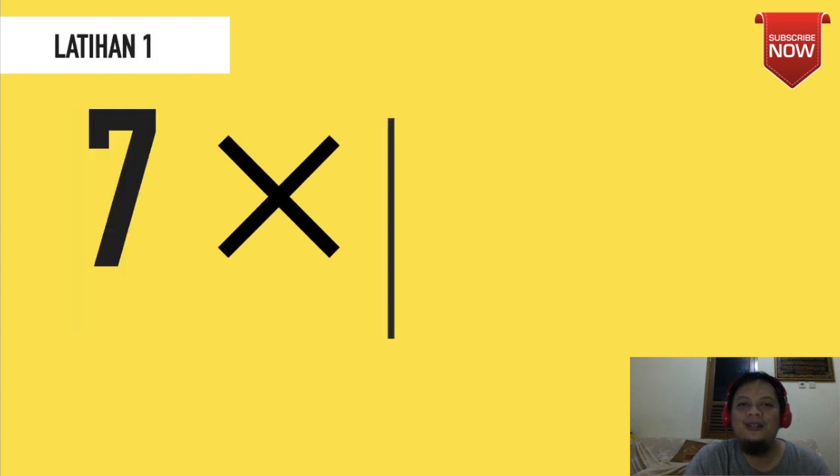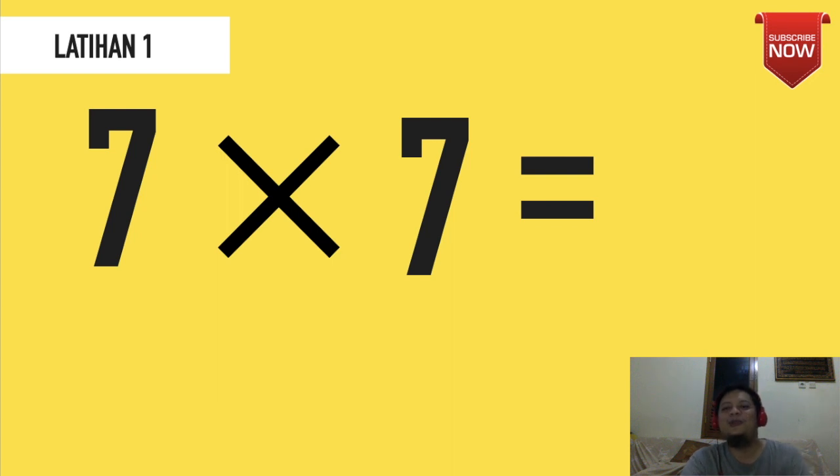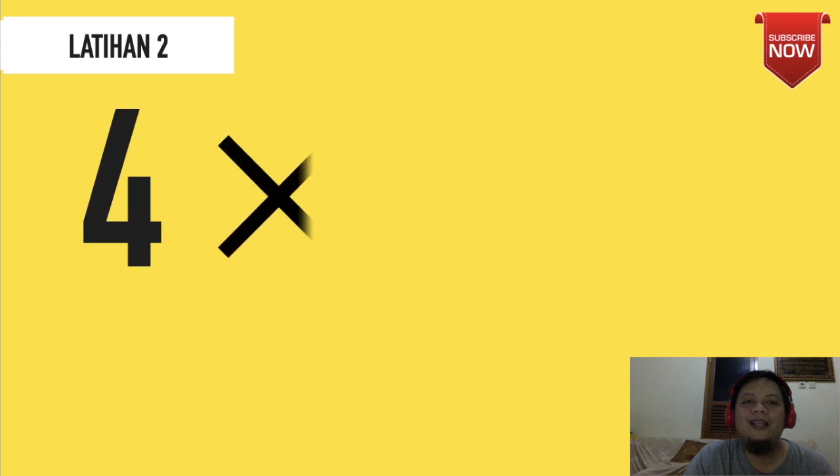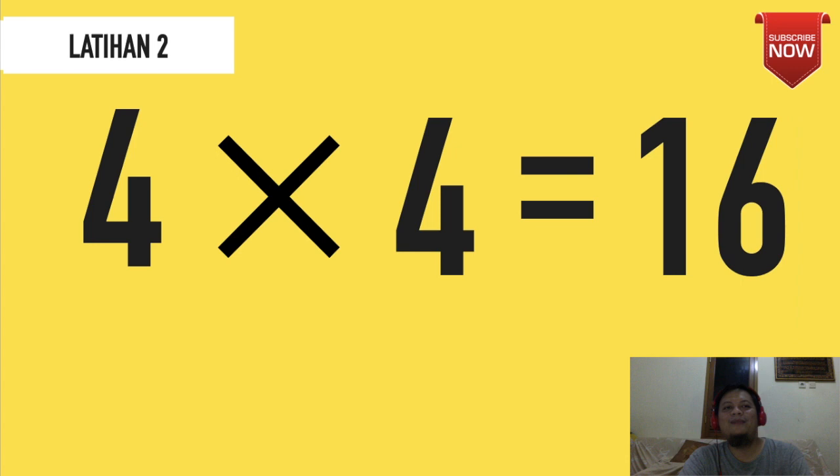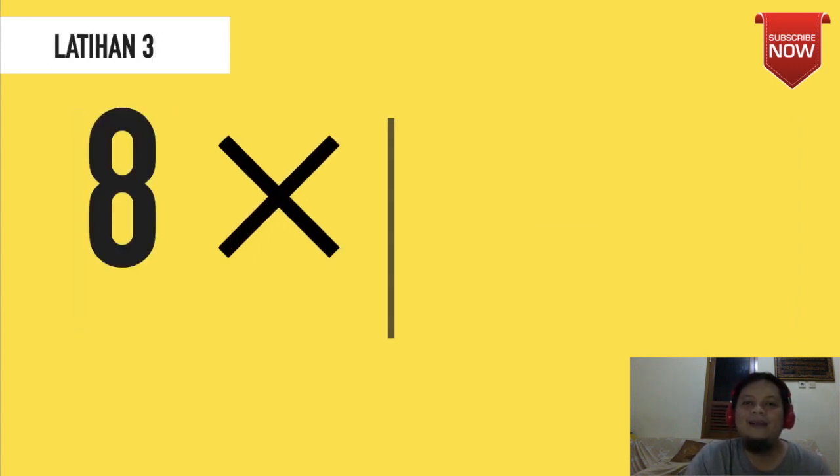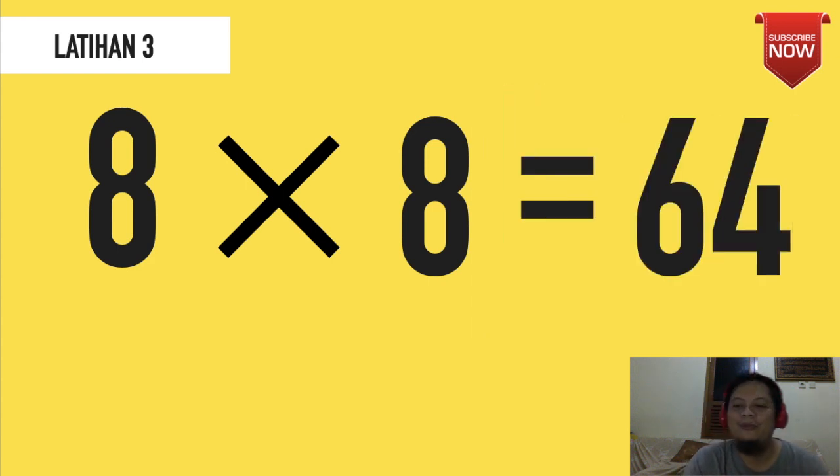Latihan: 7×7 berapa? Sudah hafal, 49. Latihan kedua: 4×4 berapa? Pintar, 16. Latihan ketiga: 8×8 berapa hasilnya? Tepat sekali, 64. Itulah trik dari perkalian. Kita menghafal perkalian hanya beberapa saja, tidak semuanya, tetapi secara tidak langsung kita sudah menghafalkan semuanya. Triknya adalah dengan menghafal dan menggunakan sifat komutatif atau pertukaran.